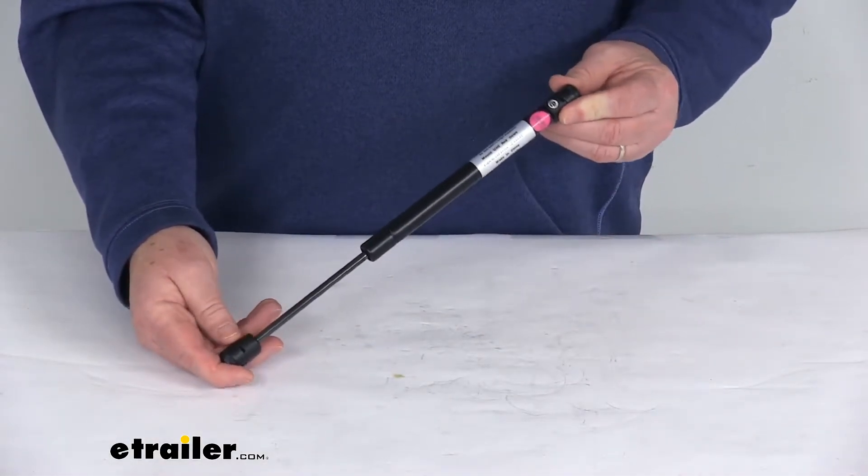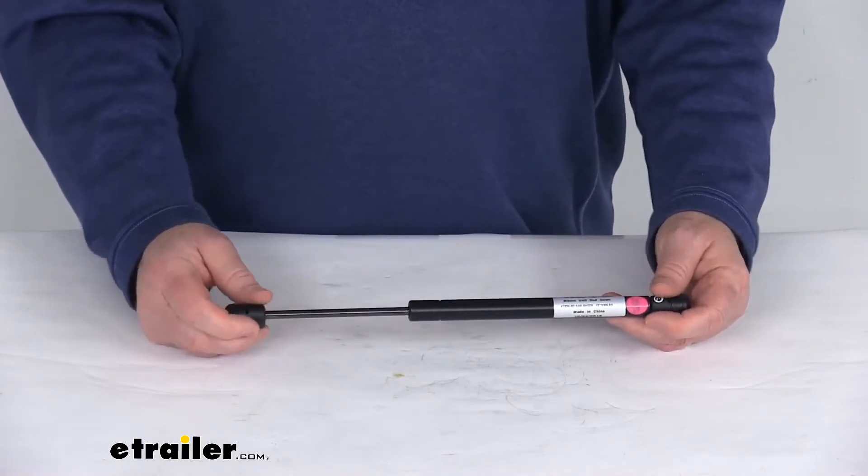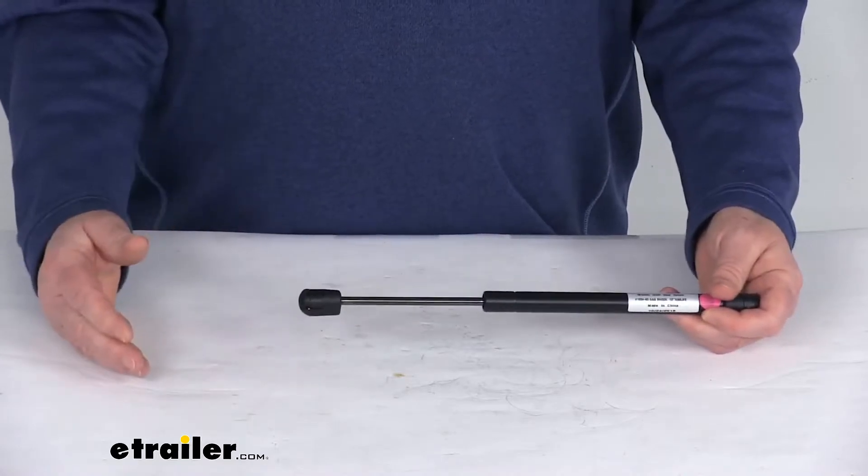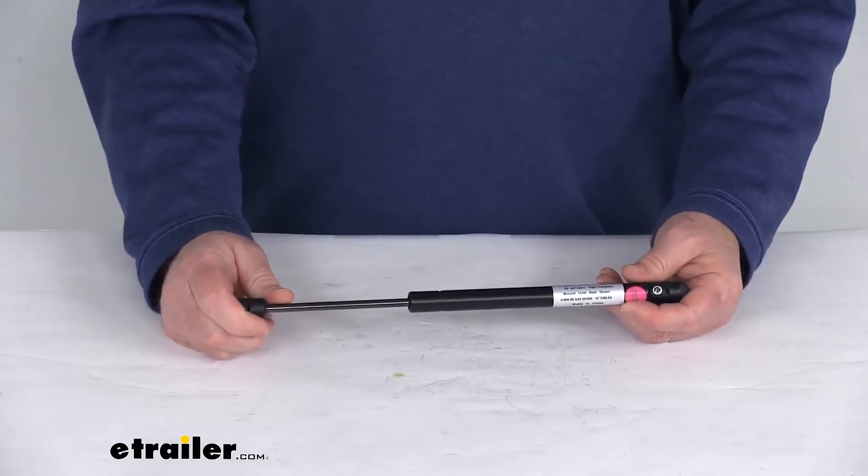Now this gas strut is designed to replace a worn out or damaged strut on your boat hatch lid or compartment door. This strut will extend to ease lifting your hatch lid or compress to gently close your hatch without slamming.